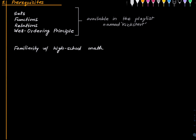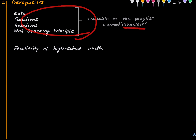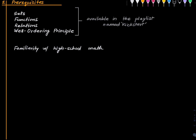Welcome to this first lecture in this new series of lectures in linear algebra. We will be discussing the notion of a field in this lecture. Let me delineate some prerequisites: we need to know the language of sets, functions, and relations — all available in the playlist named Kickstart. We also need to know the well-ordering principle for the lecture series in general, also available in Kickstart. We will be assuming high school level mathematics.